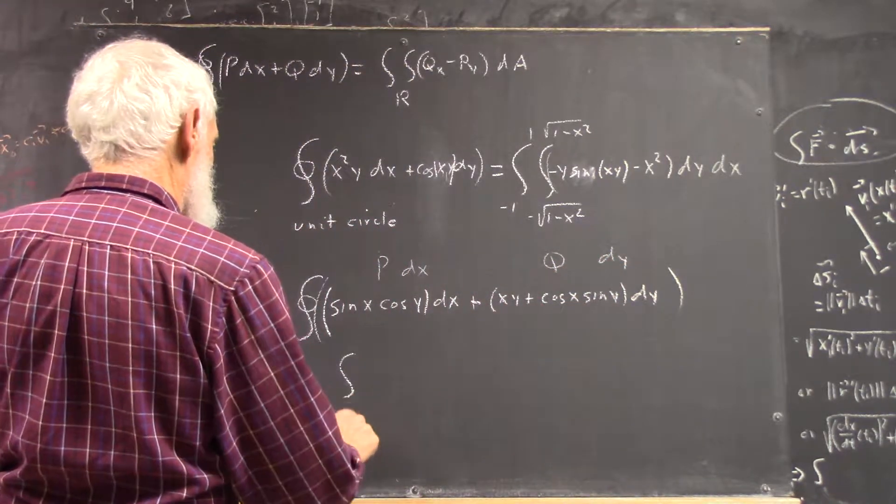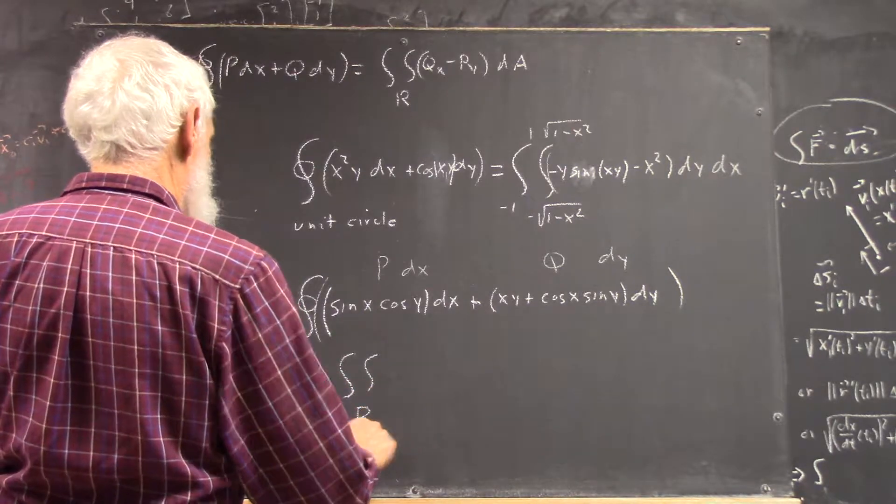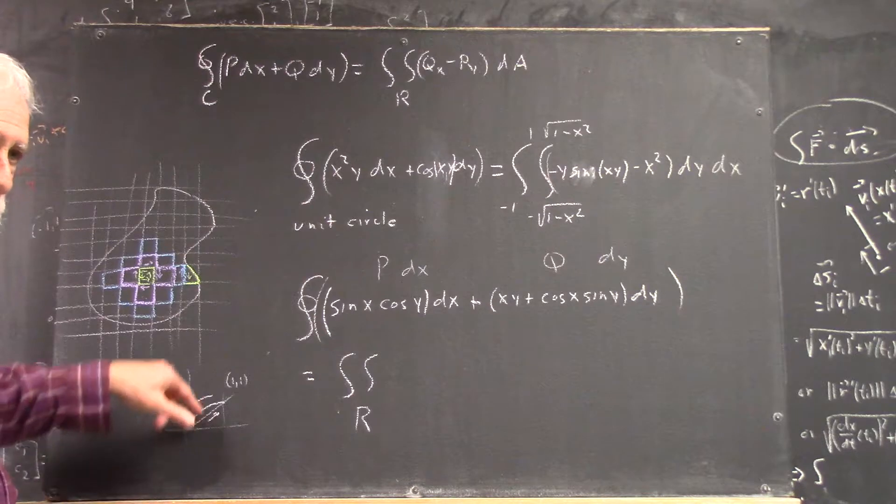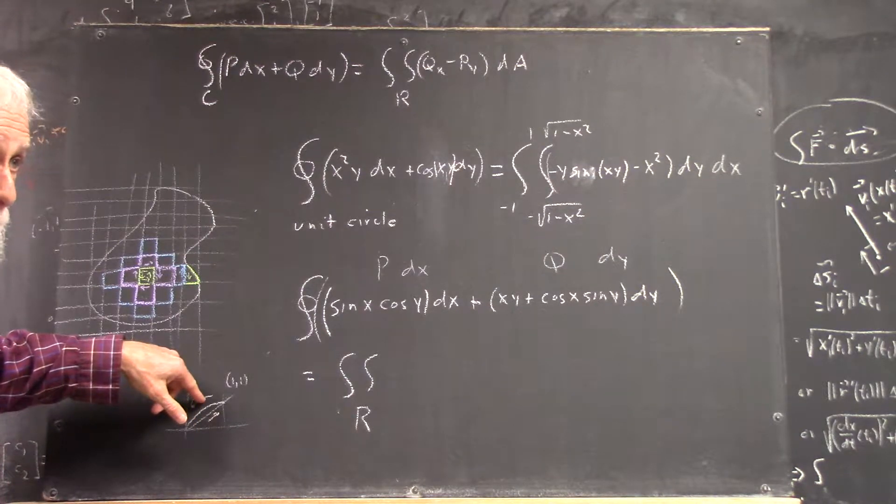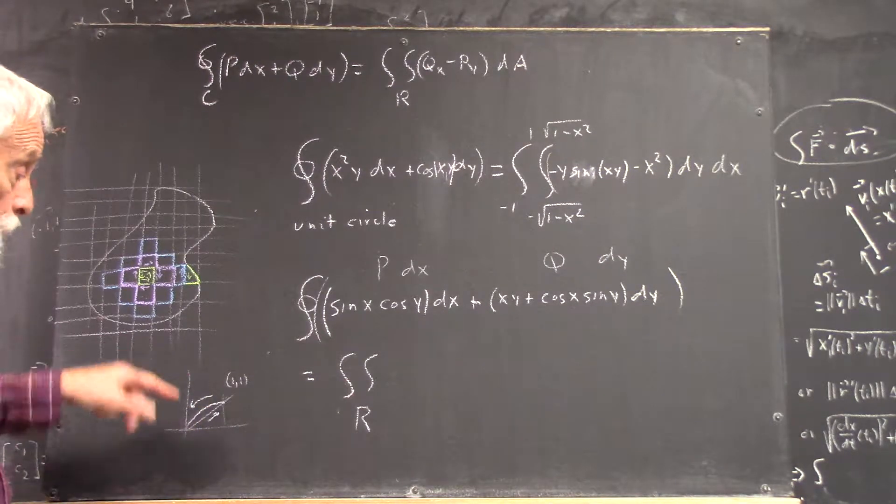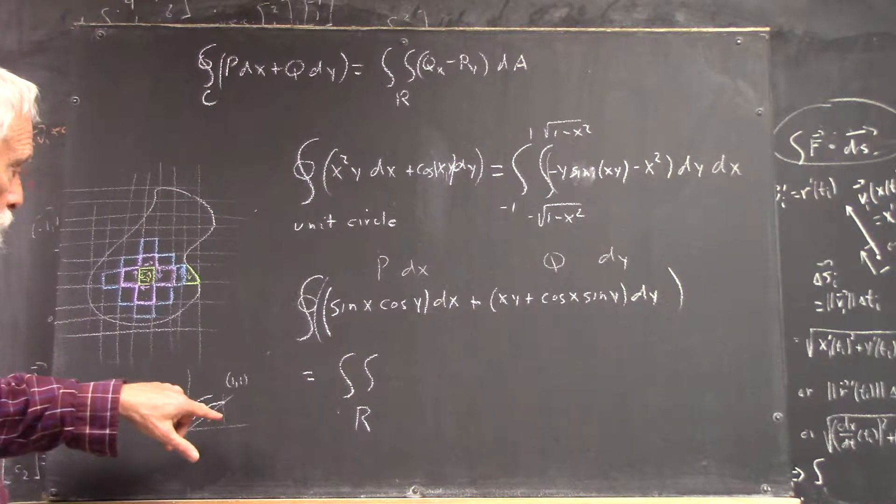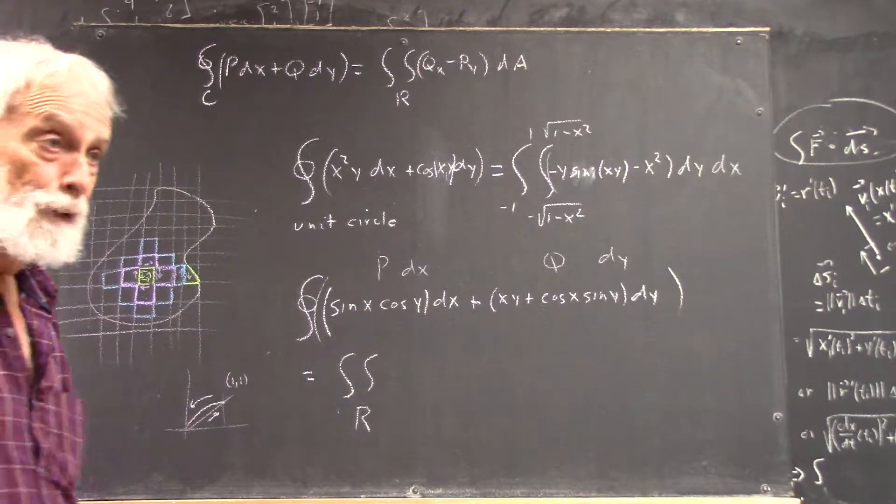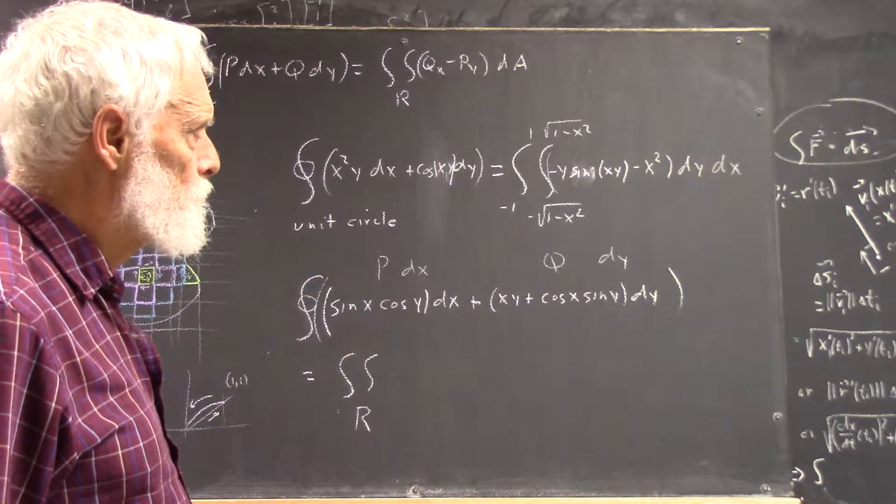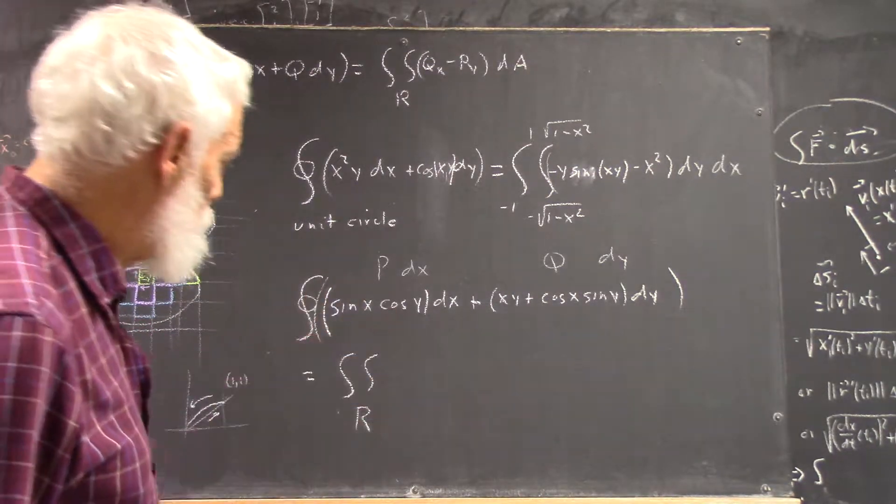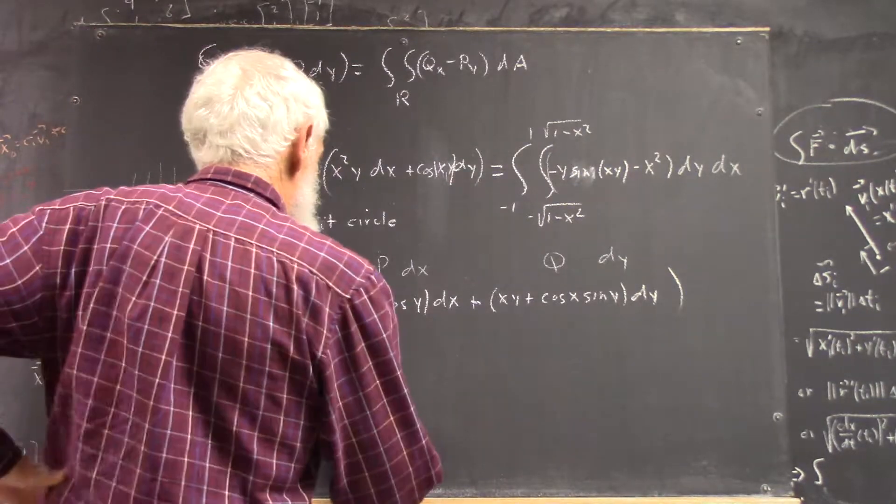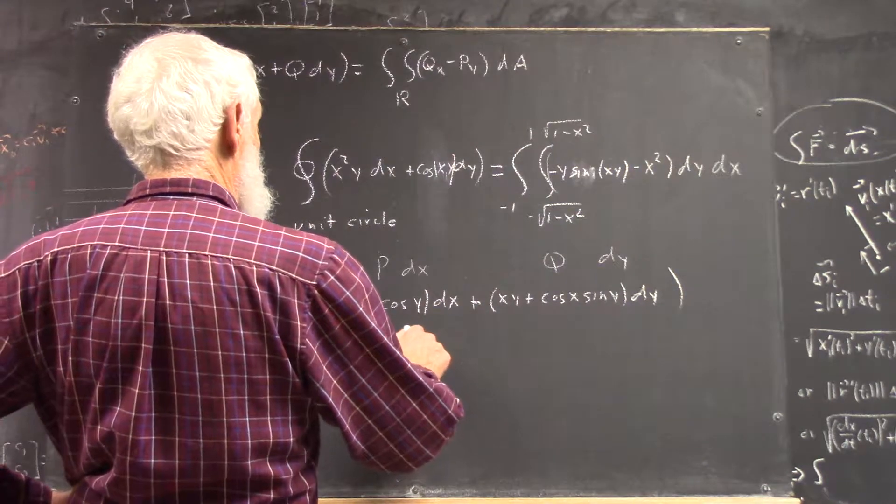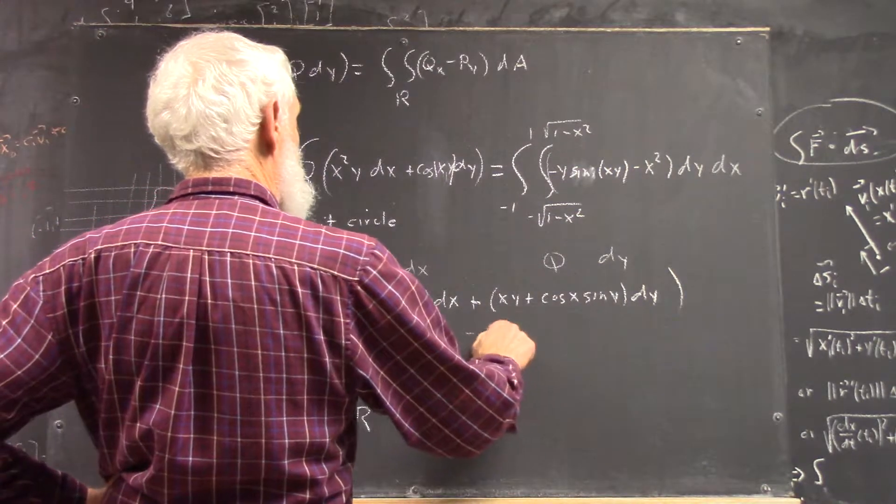That's going to equal the integral over the region, which is easy to do. You just let x go from 0 to 1, y from x to square root of x. Or you can let y go from 0 to 1, x goes from y squared to 1. There's your integral.